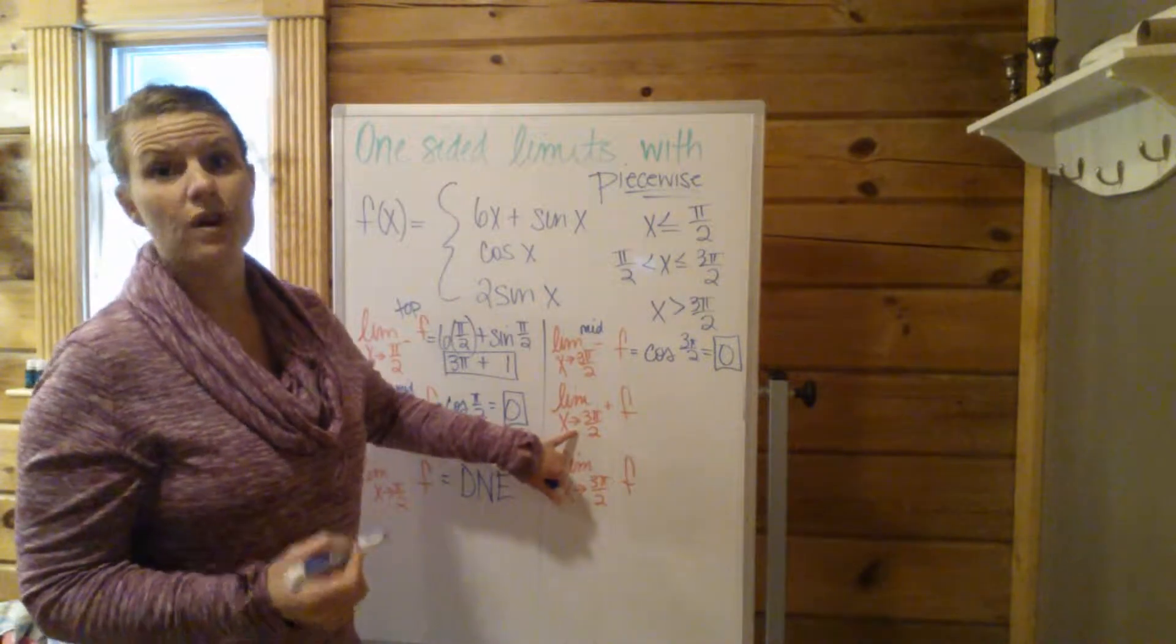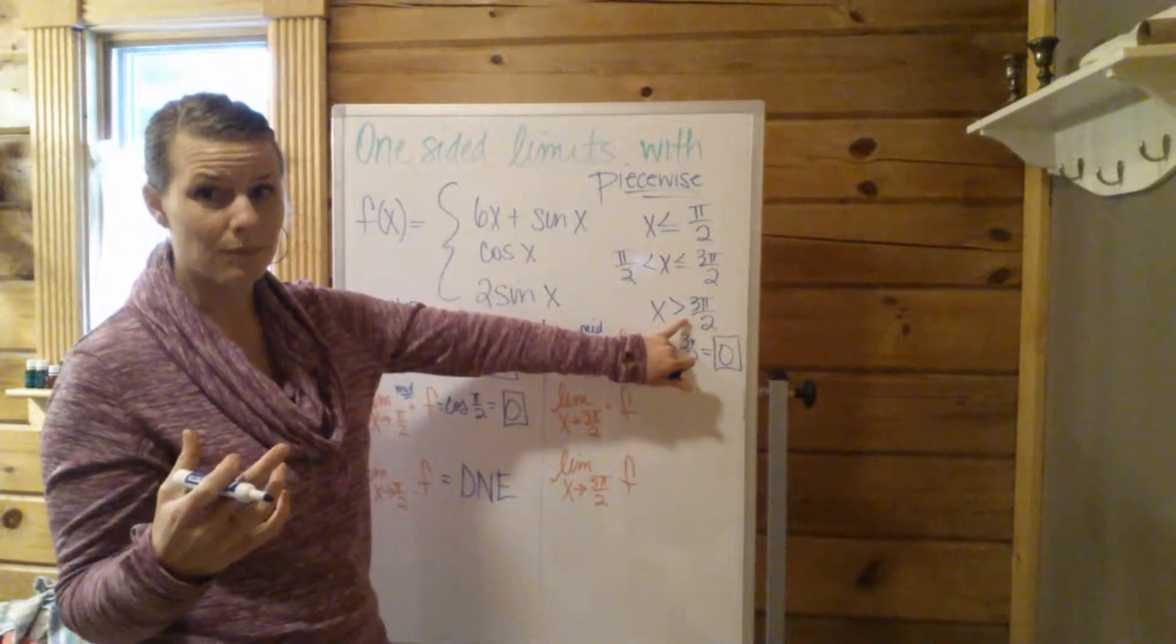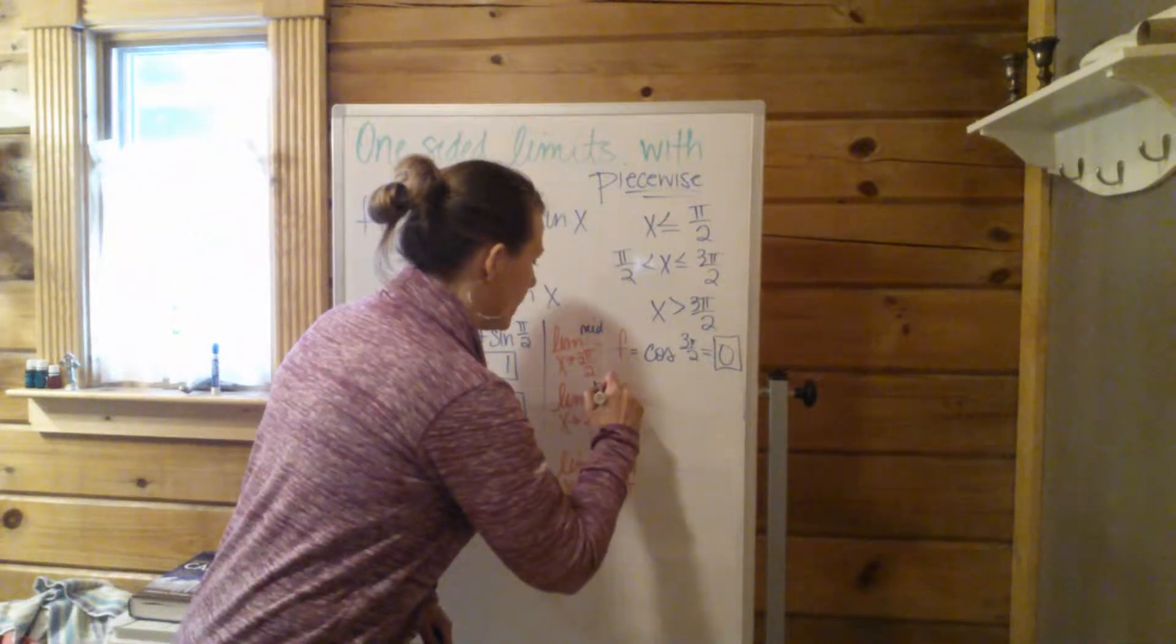As x approaches 3π/2 from the right, that means slightly greater than 3π/2. That's the bottom. We're finally to the bottom line.